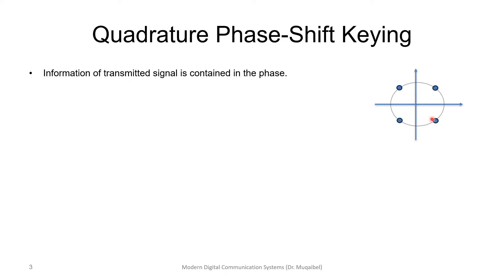When I say QPSK, it stands for quadrature phase-shift keying, and the information transmitted signal is contained in the phase. In QPSK, in quadrature, we have four components, four possible messages or symbols, and as you can see, we can draw them in a circle, which means the distance from the origin is the same, which means the amplitude is the same. So the information is not in the amplitude, it's rather in the phase.